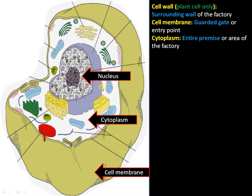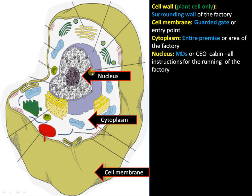Then comes the nucleus, the controlling center of the cell. The nucleus can be considered as the CEO's cabin where all decisions are made and all instructions are stored for the smooth running of the factory. In the cell, the nucleus is the site of storage of genetic material DNA.